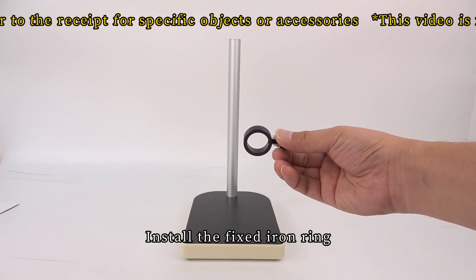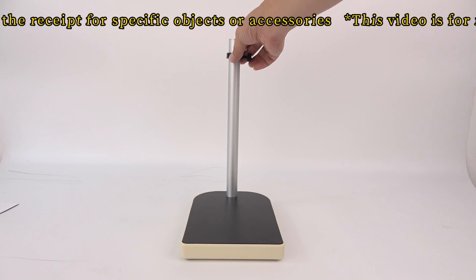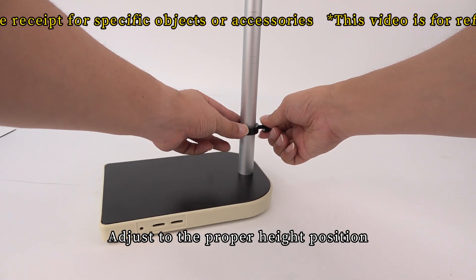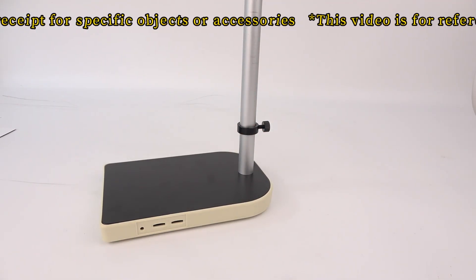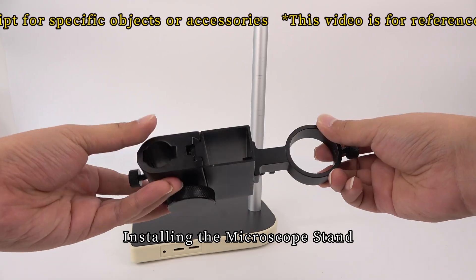Install the fixed iron ring. Adjust to the proper height position. Install the microscope stand.